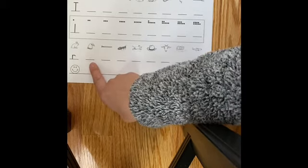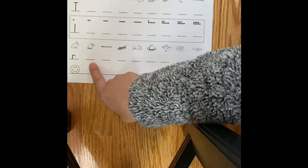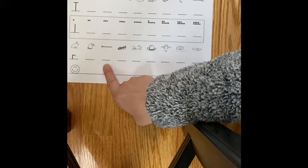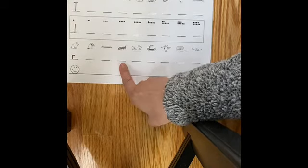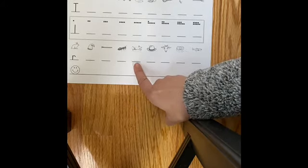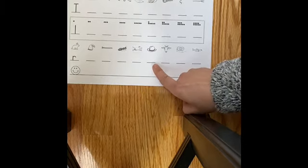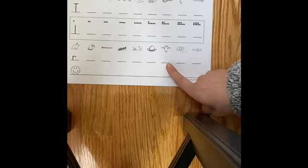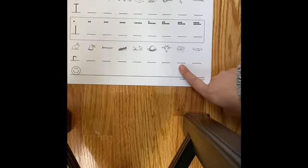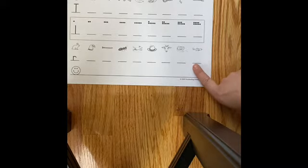Can you make a little e? A lowercase e on the line. A lowercase n. A lowercase a. A lowercase d. A lowercase h. A lowercase g. A lowercase y. And a lowercase p.